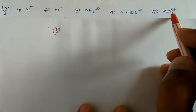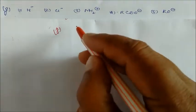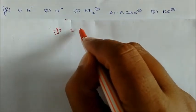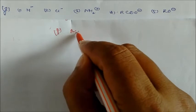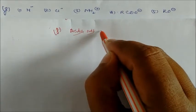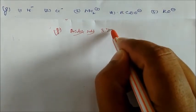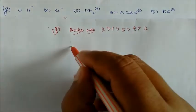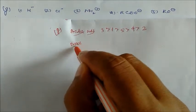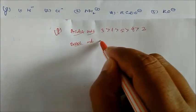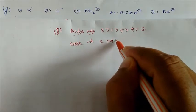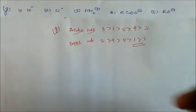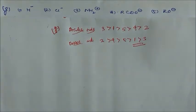Writing the acidity order: 3 > 1 > 5 > 4 > 2. Therefore, the basicity order (reverse) is: 2 > 4 > 5 > 1 > 3. This gives the correct ordering of the conjugate bases in terms of their basic strength.